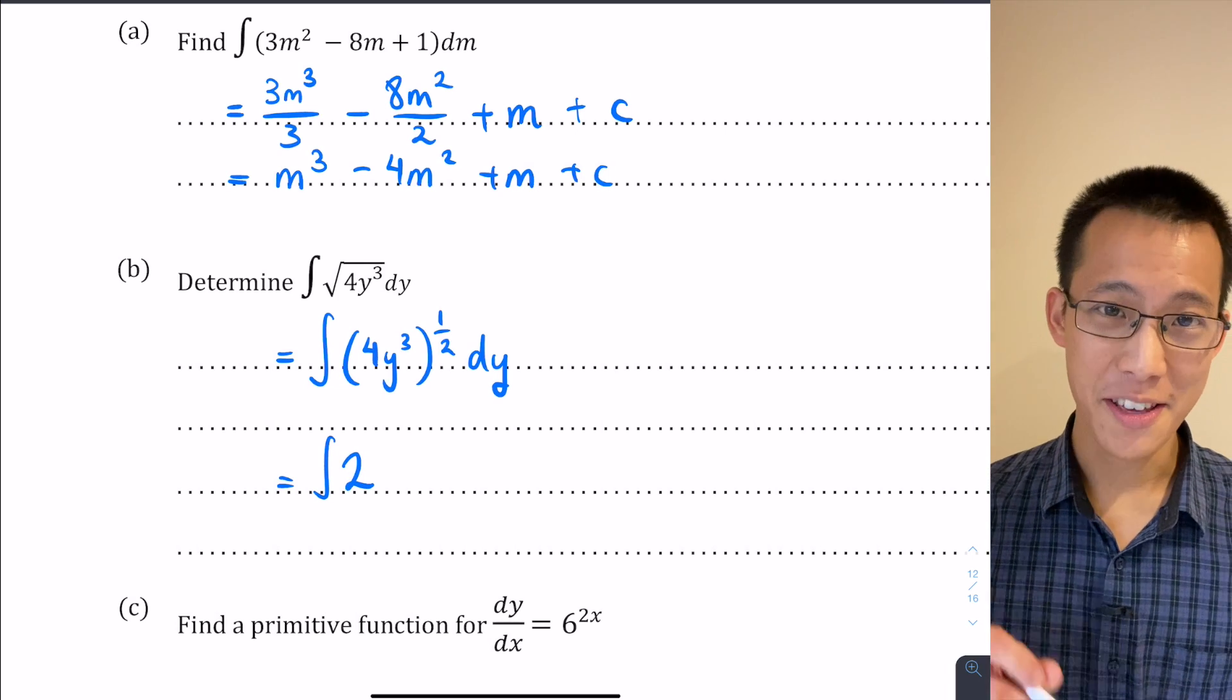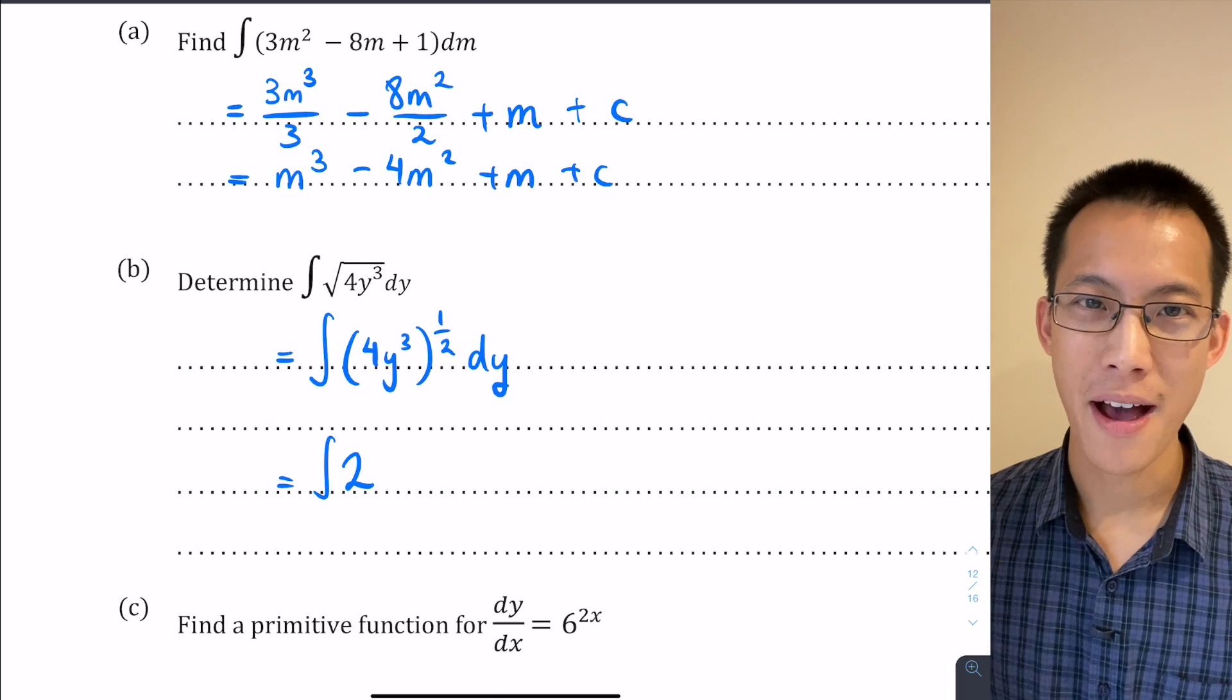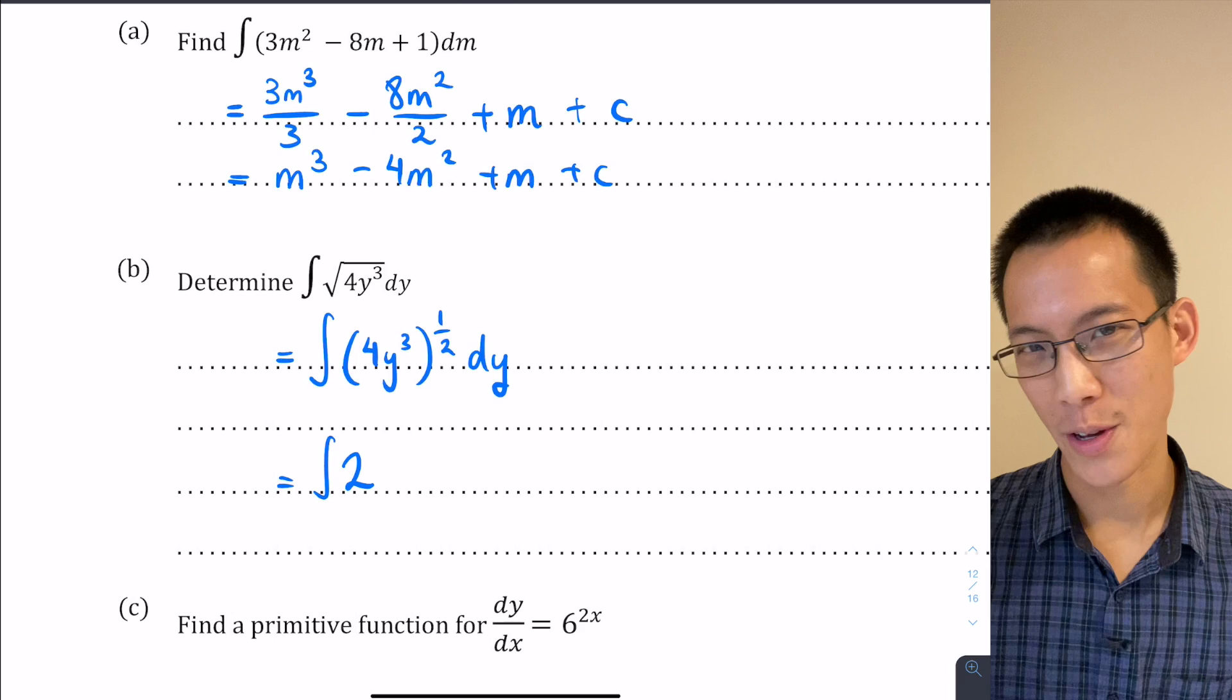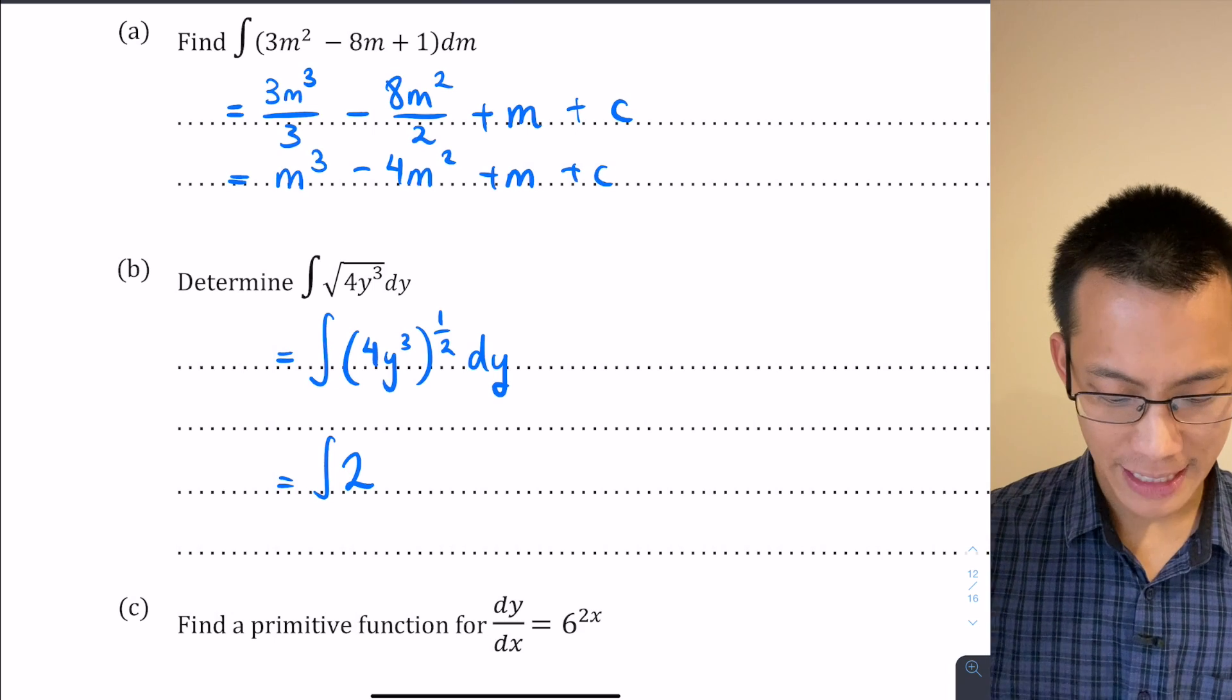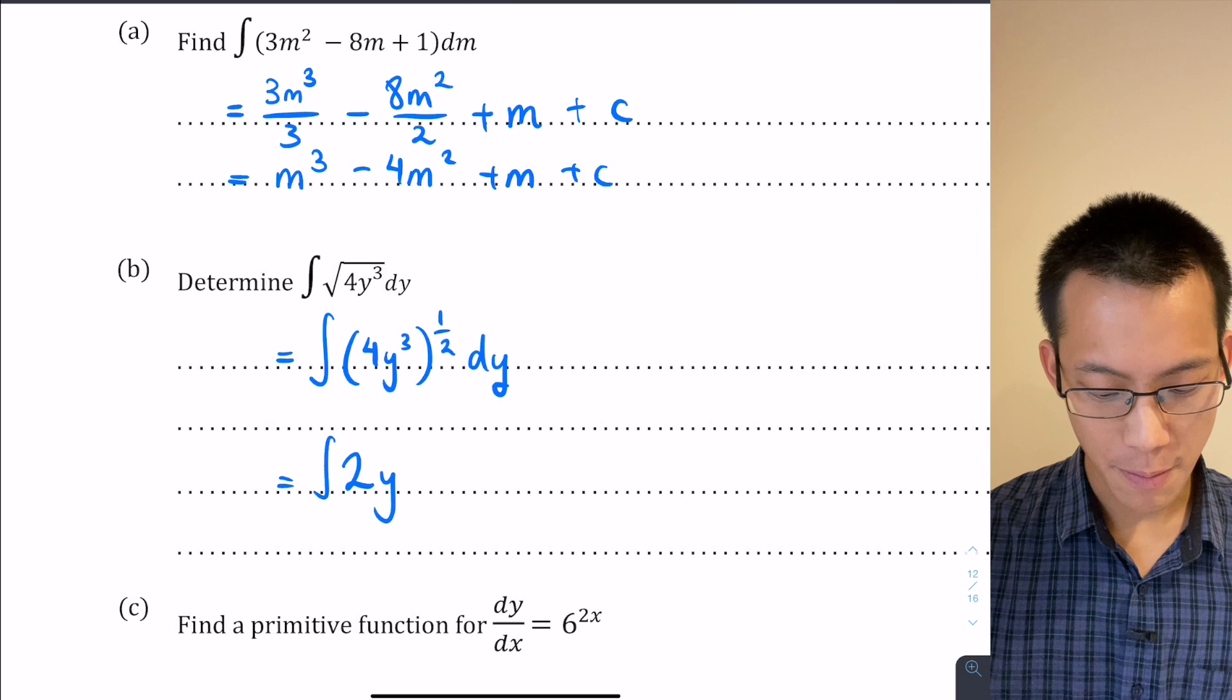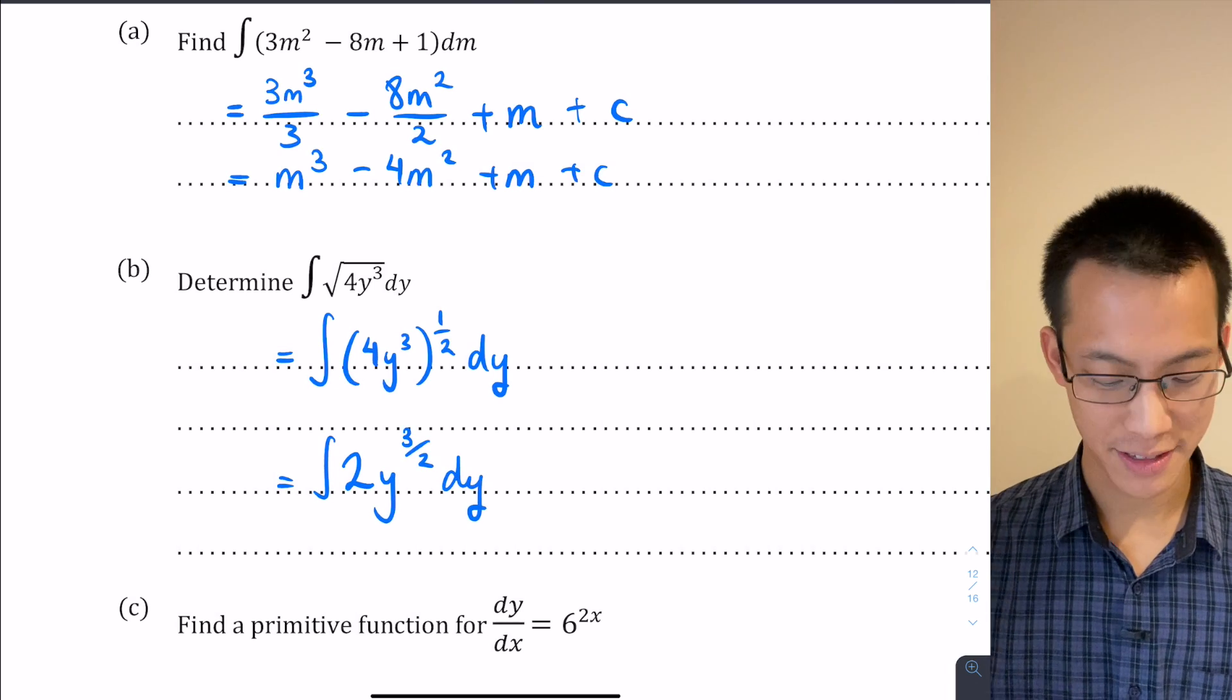y³ to the power of a half is y to the power of 3 multiplied by a half - that's one of the index laws which we learned all the way back in years 8 and 9 really. So that's going to be y to the power of 3/2, integrating with respect to y.